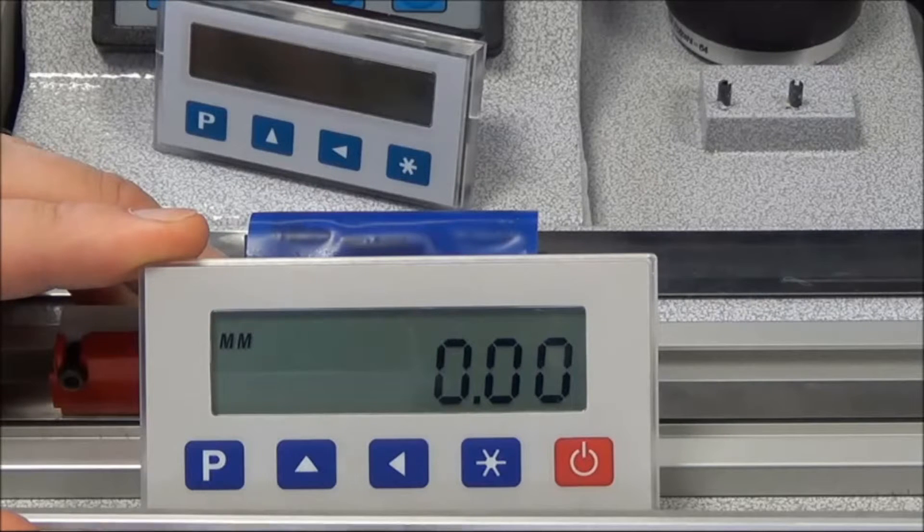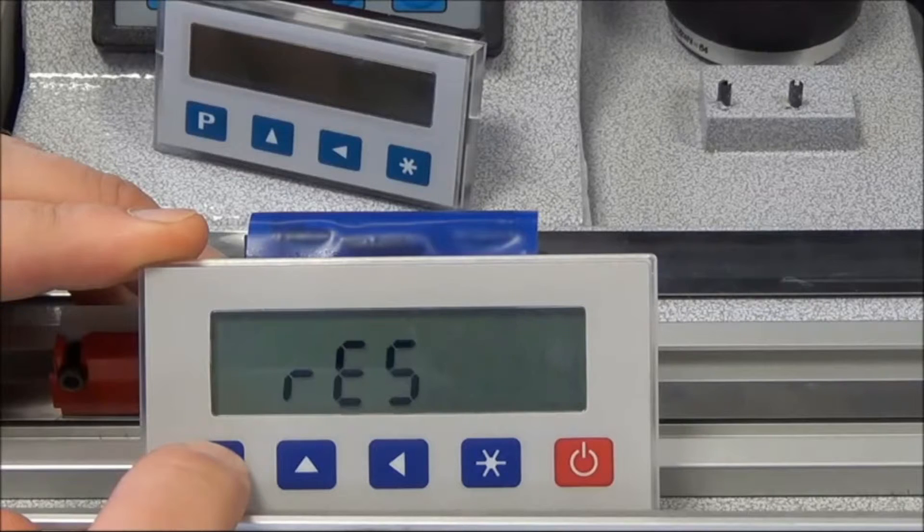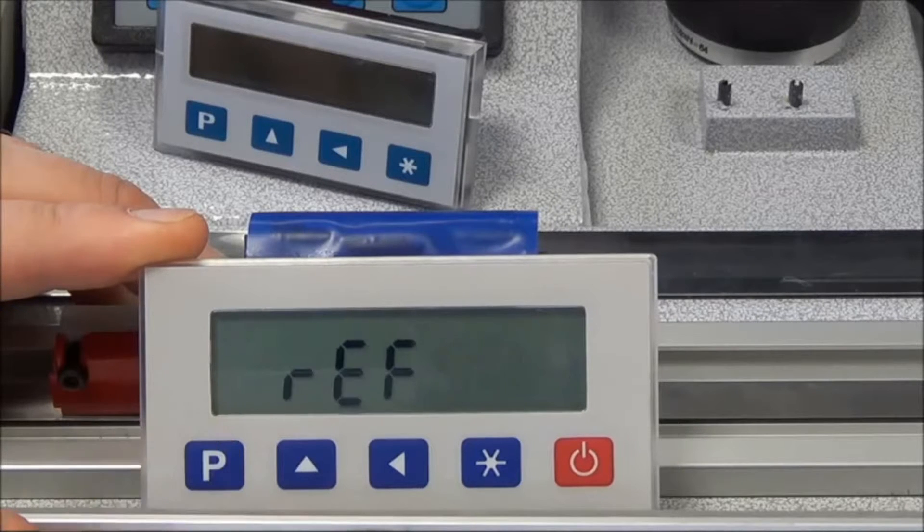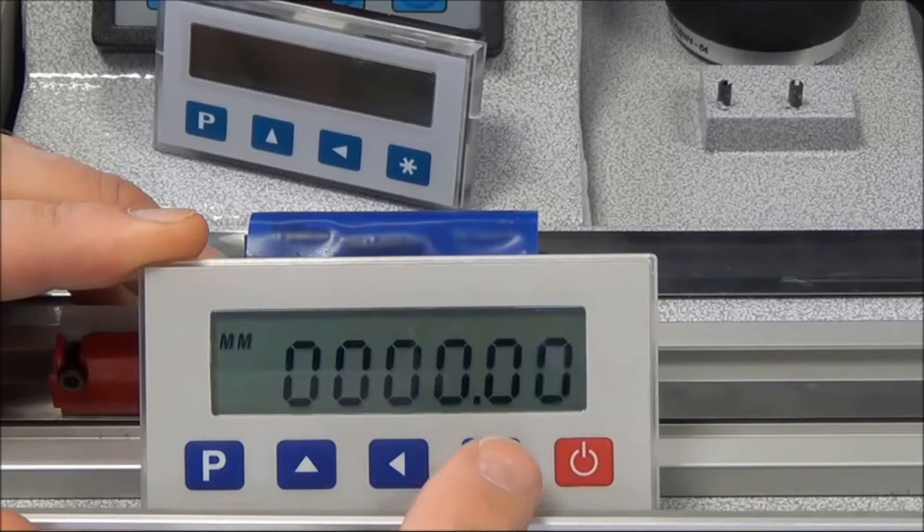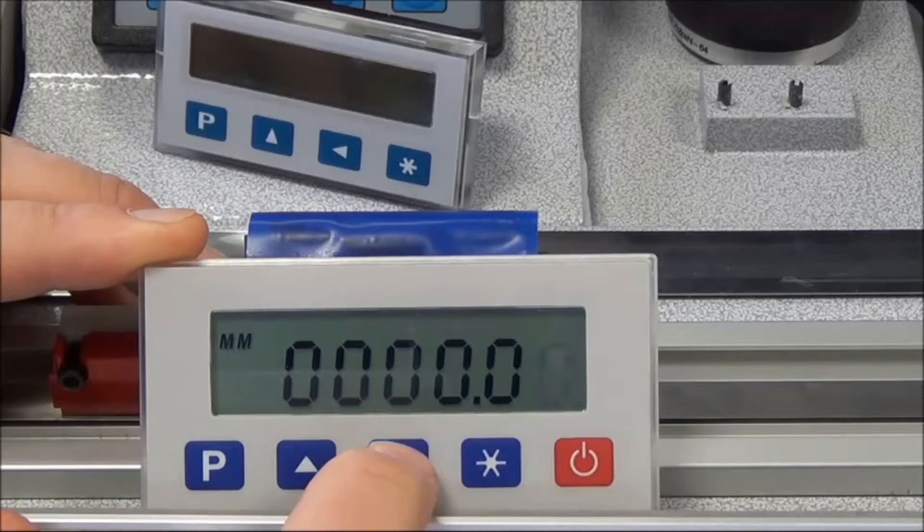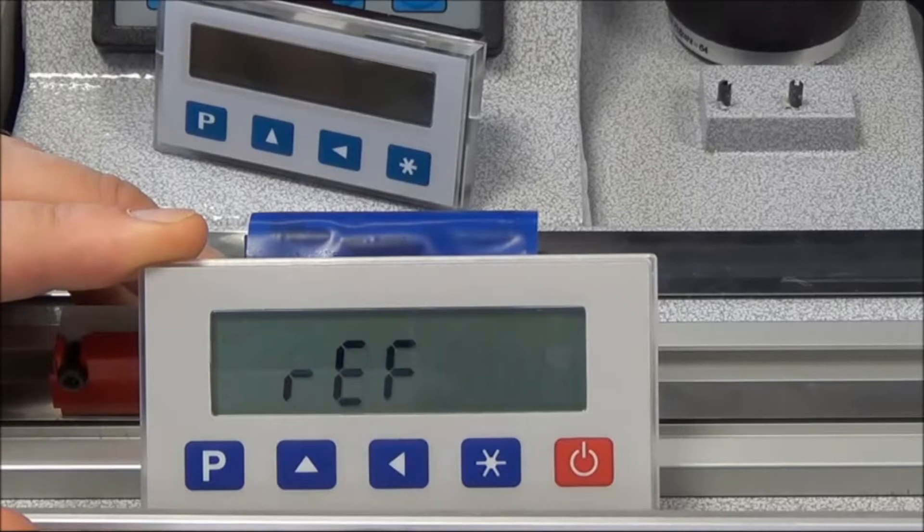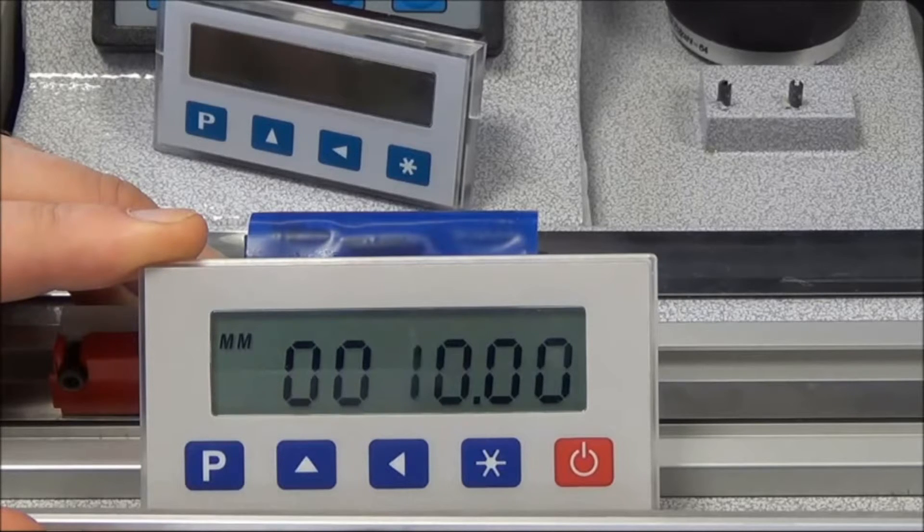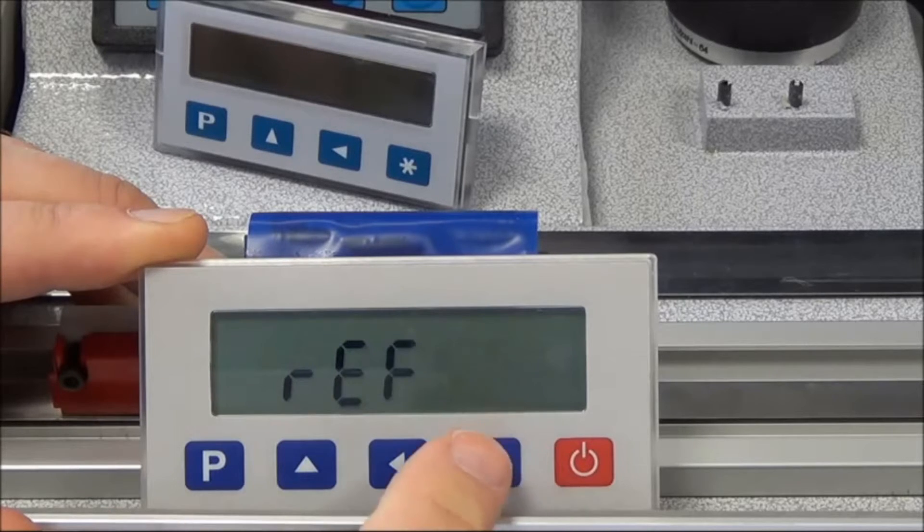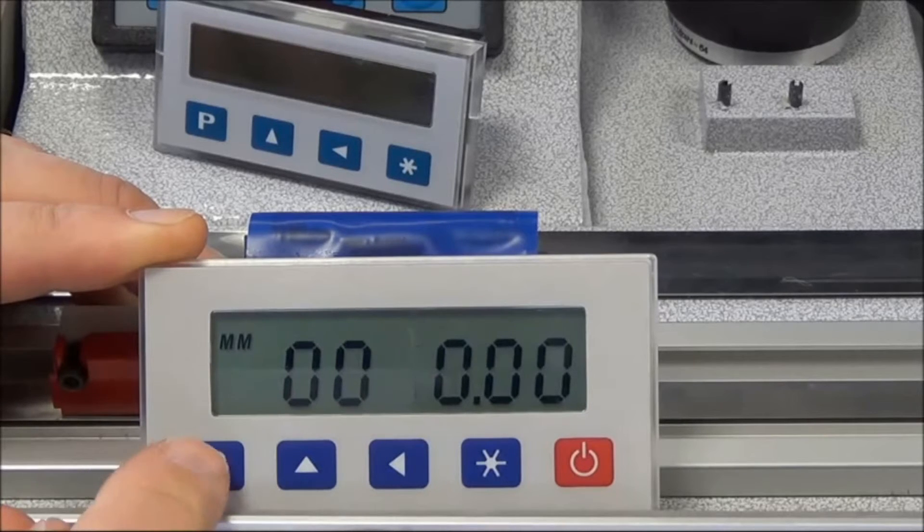When you go into the programming mode, you step through by pressing the P button to the reference value. The default is zero. To get 10 millimeters in there, you move along to the digit you want to change, move it up one. It shows 10 millimeters. Press the star button to register the change and then come out.